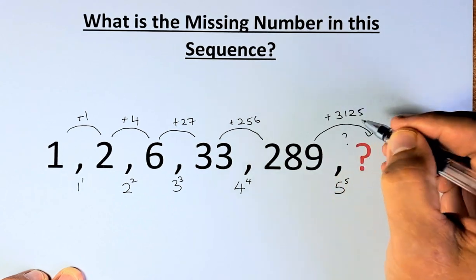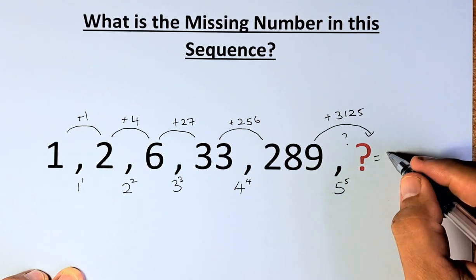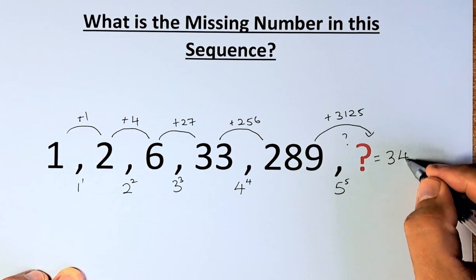So if you add 289 to 3,125, the answer, the question mark answer, is going to be 3,414.